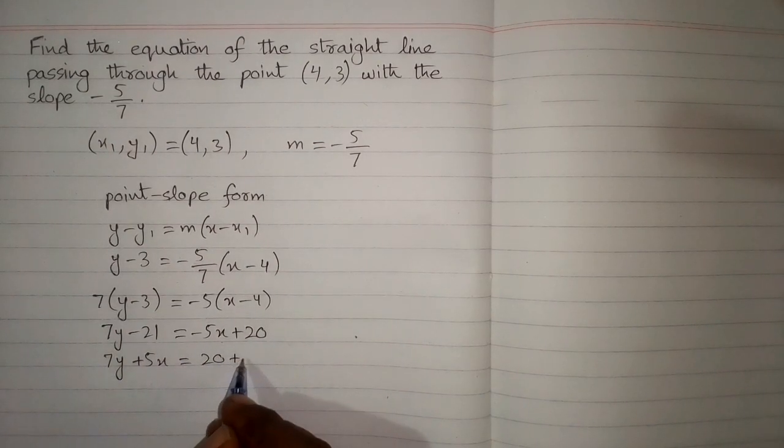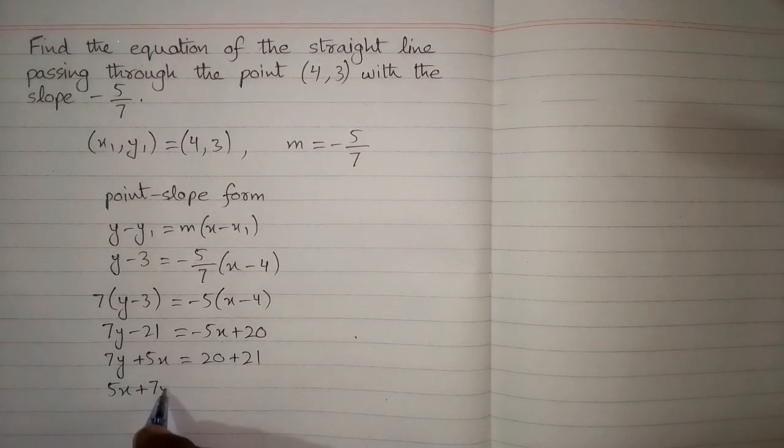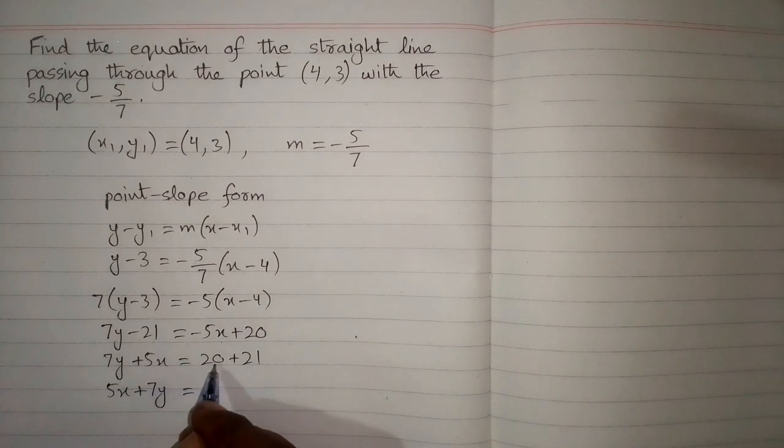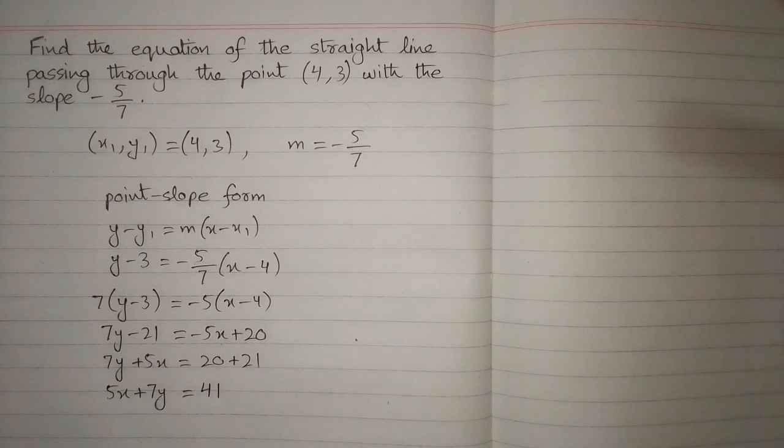This can be written as 5x + 7y = 20 + 21, which equals 41. This is the required equation of the straight line passing through the given point and having the slope -5/7.